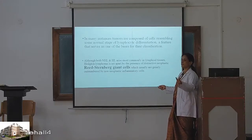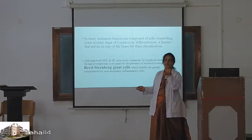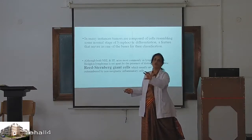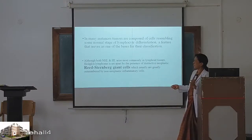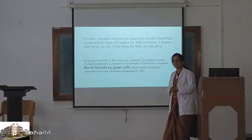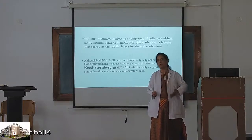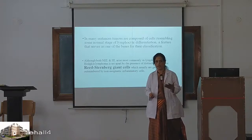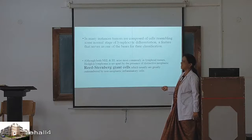What are the two lymphomas that affect the lymph nodes? Hodgkin's lymphoma and non-Hodgkin's lymphoma. Please register these two terminologies. Hodgkin's lymphoma — why is it called Hodgkin's? It is a special type, set apart by the presence of something special. It is a malignant tumor, but it has specialized cells which are known as Reed-Sternberg giant cells.